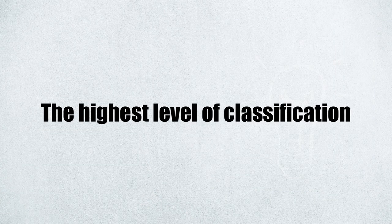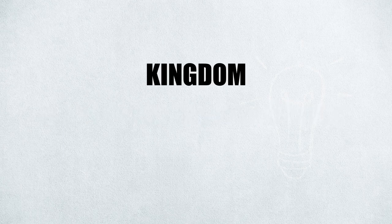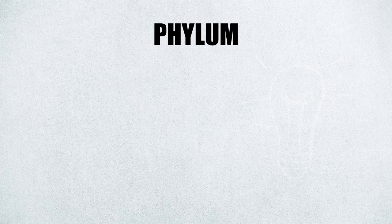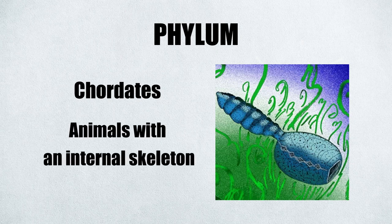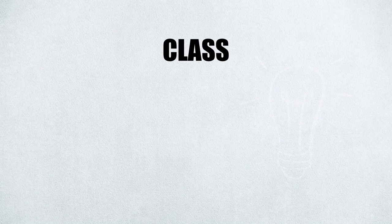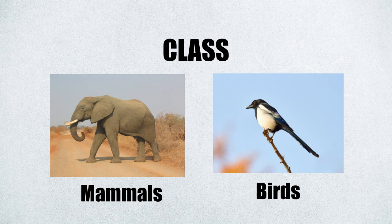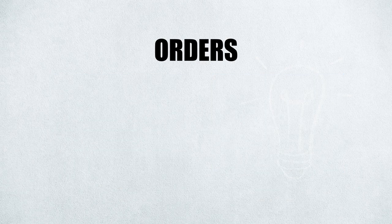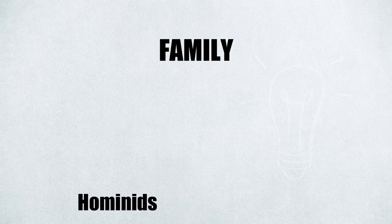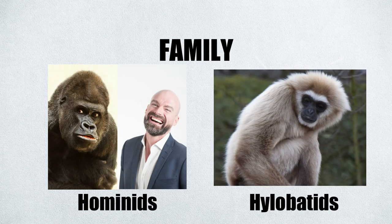The highest level of classification in Linnaean taxonomy is kingdom, which represents major divisions of organisms like the plant and animal kingdom. Below kingdom is phylum or phyla. Phyla in the animal kingdom include chordates, which are animals with an internal skeleton, and arthropods, which are animals with an external skeleton. Under phyla is class. Examples of classes in the chordate phylum include mammals and birds.